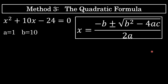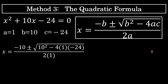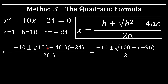Again, a is 1, b is 10, and c is negative 24. Substituting into the quadratic formula: negative b gives negative 10, plus or minus the square root of b squared — 10 squared — minus 4ac, which is minus 4 times 1 times negative 24, all over 2 times 1. Under the radical, 10 squared is 100, and 4 times 1 times negative 24 is negative 96. So we have 100 minus negative 96, which is the same as 100 plus 96, giving 196.